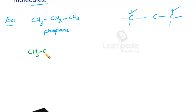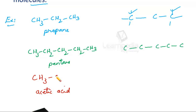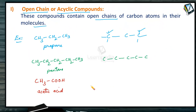Take another example of pentane: CH3-CH2-CH2-CH2-CH3. Here also the terminal carbon atoms are not linked with each other, so we call it an acyclic or open chain compound. It need not always be a hydrocarbon — it can be any compound. Acetic acid is also an example of an open chain compound.